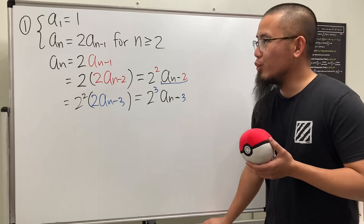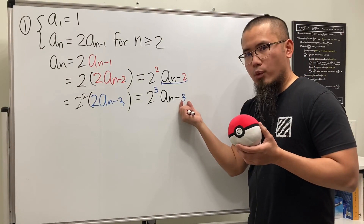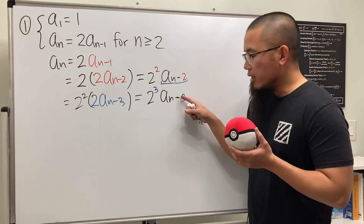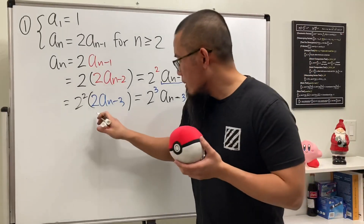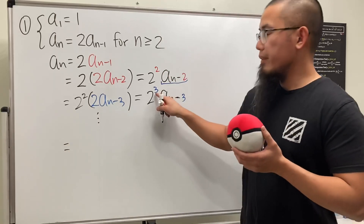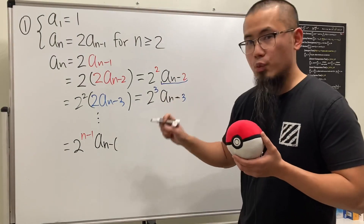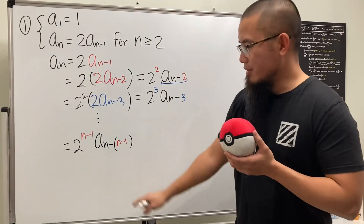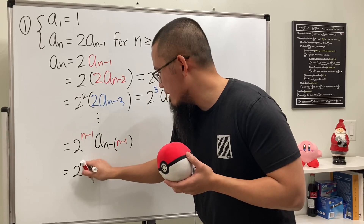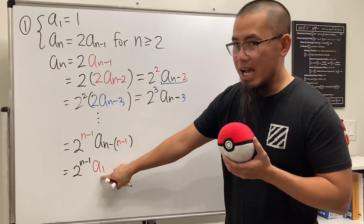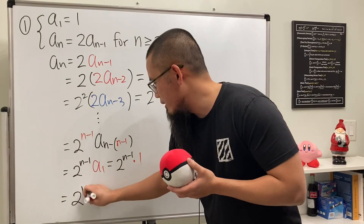The idea is that we have to do it enough times to reach the initial condition, which is a₁. We need to choose the subscript so it equals one. We can't use n because n minus n is zero, so we go one step before: use n minus one. Plugging in, we get 2^(n-1) times aₙ₋₍ₙ₋₁₎, which is 2^(n-1) times a₁. Using the initial condition, this equals 2^(n-1) times one, so aₙ = 2^(n-1).